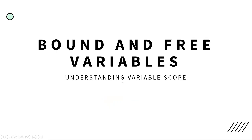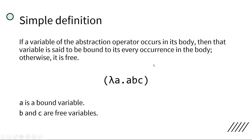Let's proceed. Bound and free variables. So in this topic, we will discuss scoping or scopes of variables. Here's a simple definition: if a variable of the abstraction occurs in its body, then that variable is said to be bound to its every occurrence in the body. Otherwise, it is free.